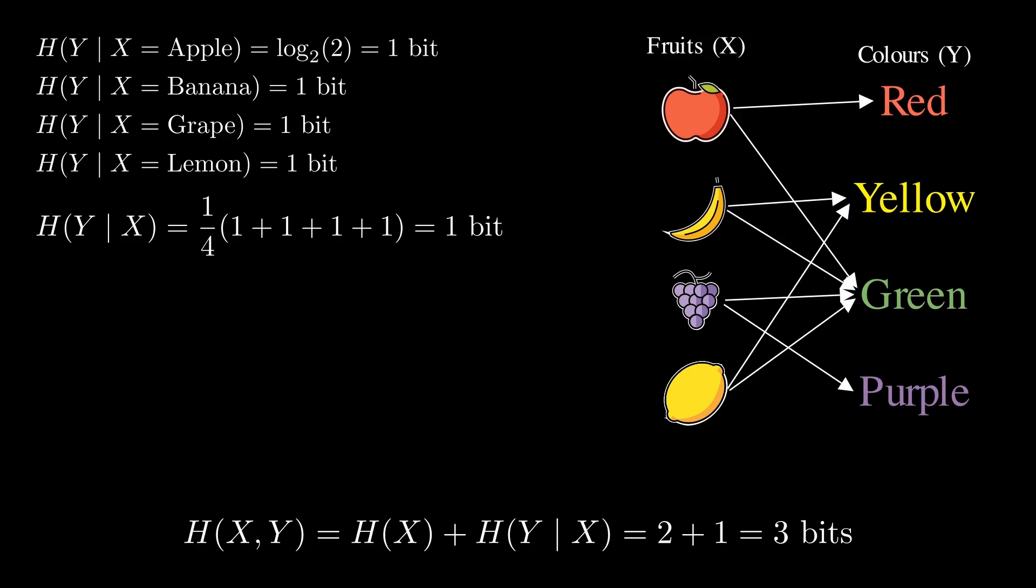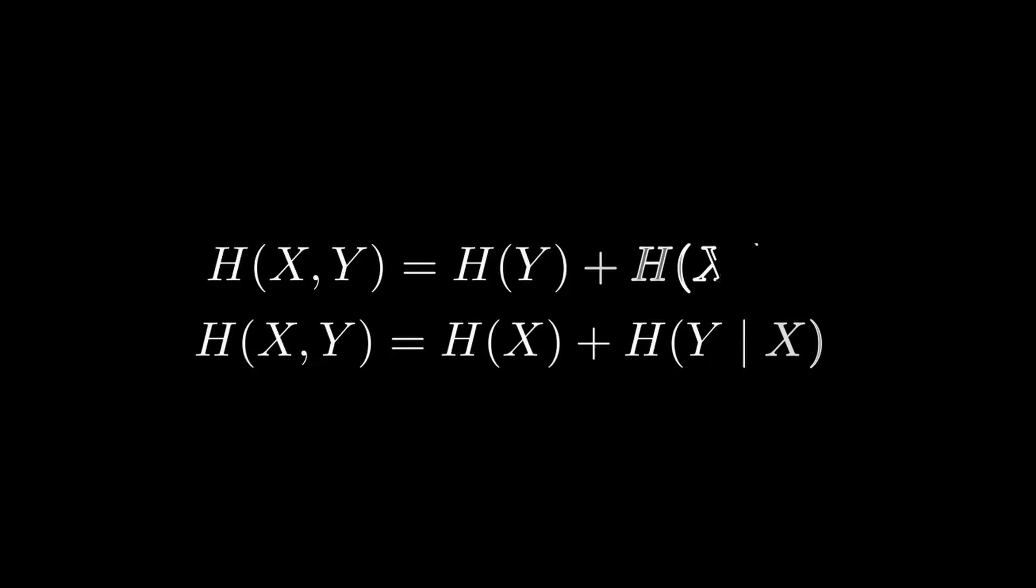So if you want to know both the fruit and the color, you would first figure out the fruit. Then, with that knowledge, figure out the color. Which gives us this formula. If you want to figure x and y, you would either start off by figuring out x or y, one of them. Then use that knowledge to figure out the other one. Said otherwise, you would figure out x then y, knowing x. Or vice versa.